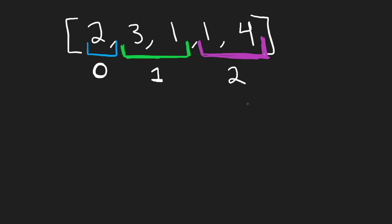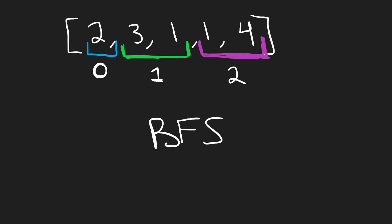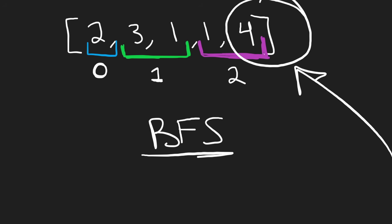We would continue this if we had more values in our array, but what we're doing here is basically a one-dimensional array breadth-first search, finding the minimum number of jumps to reach the destination. Once we reach the destination, we are done. In this case, it takes exactly two jumps. So this is the visual explanation — now let's translate this into code. It's very little code and actually pretty straightforward.